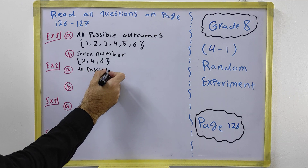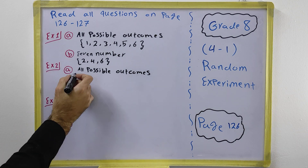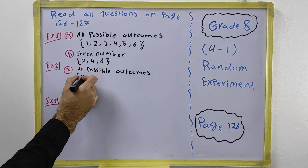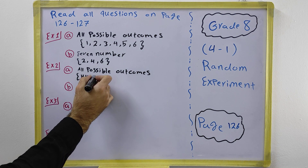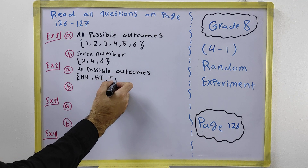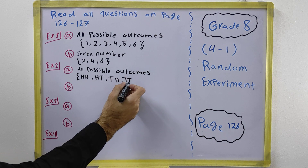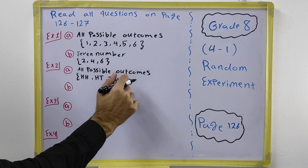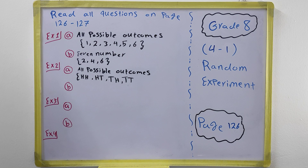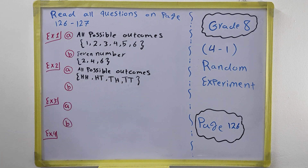When throwing two coins, the first one can be head and the second one head; or the first one head and the second one tail; or the first one tail and the second one head; or the first one tail and the second one tail — TT. We have four possible outcomes when throwing two coins at the same time: head-head, head-tail, tail-head, and tail-tail.